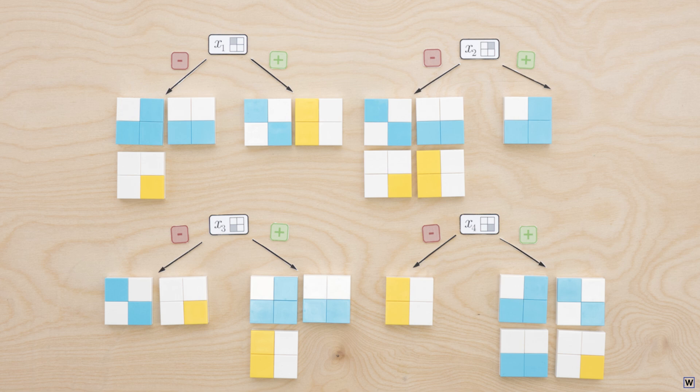Fortunately, we can still make a good argument for splitting on X4. For each possible split, we can measure how well we're doing by counting the number of classification errors we make on our training data. A simple way to do this is to assign each node the label that corresponds to the majority of the examples it contains.